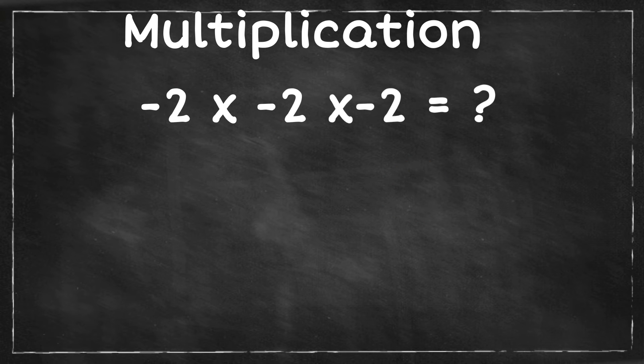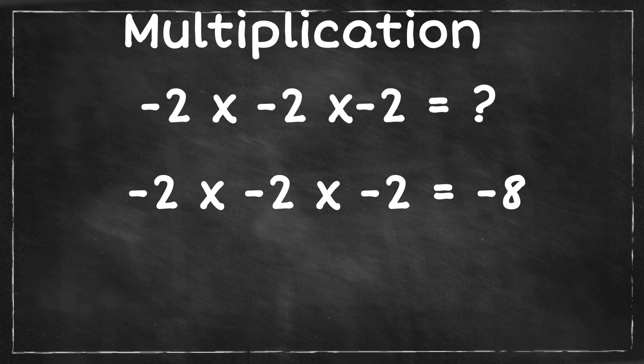How about negative 2 times negative 2 times negative 2? The answer is 8. You count the number of negative numbers, which is 3. That is odd, so it will be negative 8.